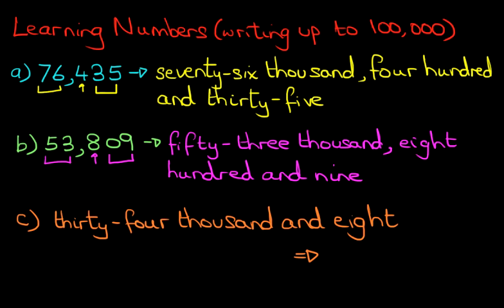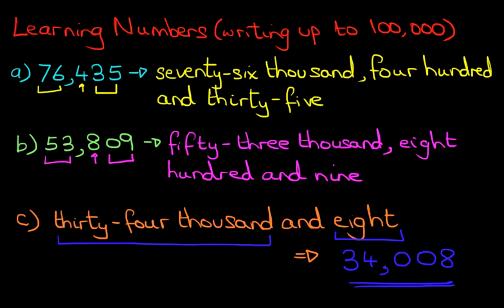Well, we write down the first part, which is 34,000. So we can do that bit straight away. 34,000. Because it's thousand, we can put a comma. And what else do we have? We have eight. We don't have any hundreds. We don't have any tens. It just says eight. That means we write down zero, zero, eight. 34,008.